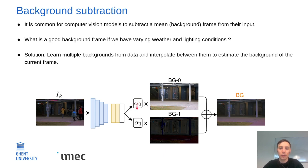These two scalar values are predicted by a small neural network. It allows us to mix and interpolate between these two background bases to get an accurate background for the current frame. By subtracting this frame from the input frame, we can really focus on the foreground that might cause the anomalies.